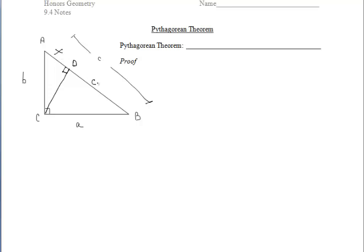I'm going to call segment AD X, which then means that segment BD is C minus X, since the whole hypotenuse has a length of C.